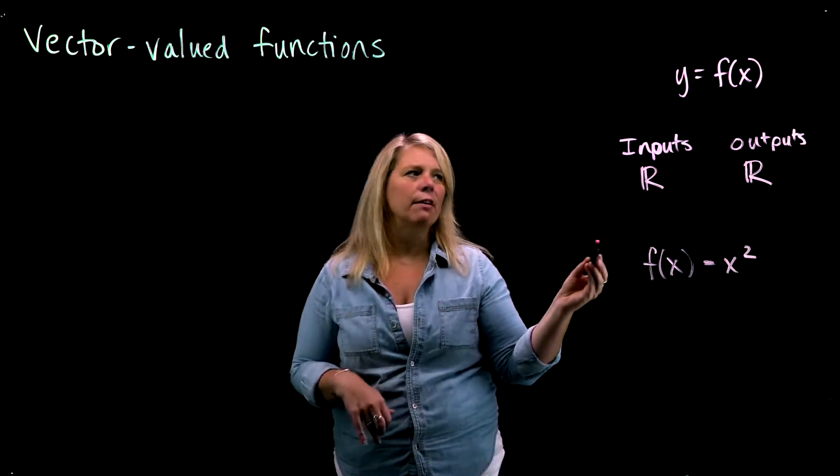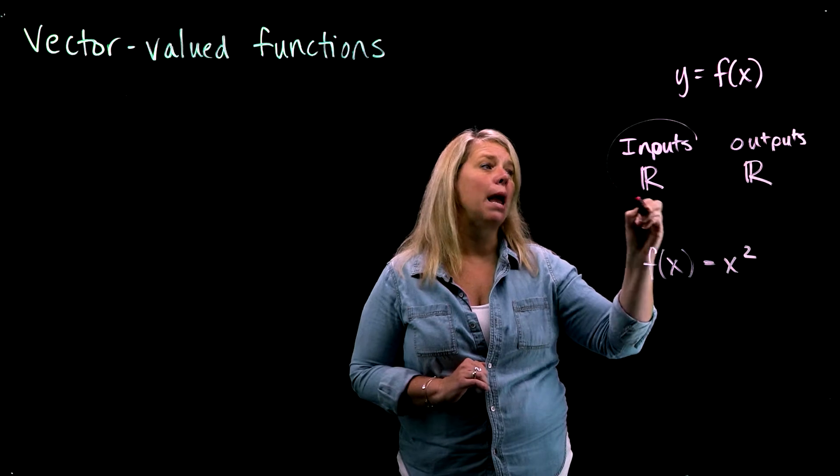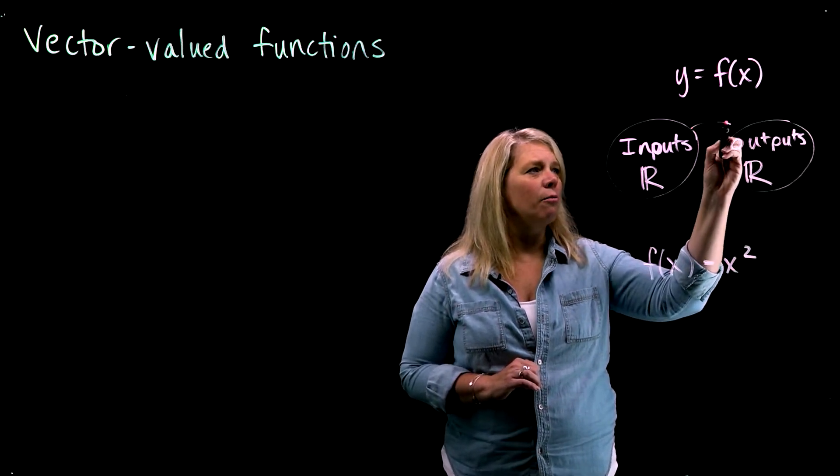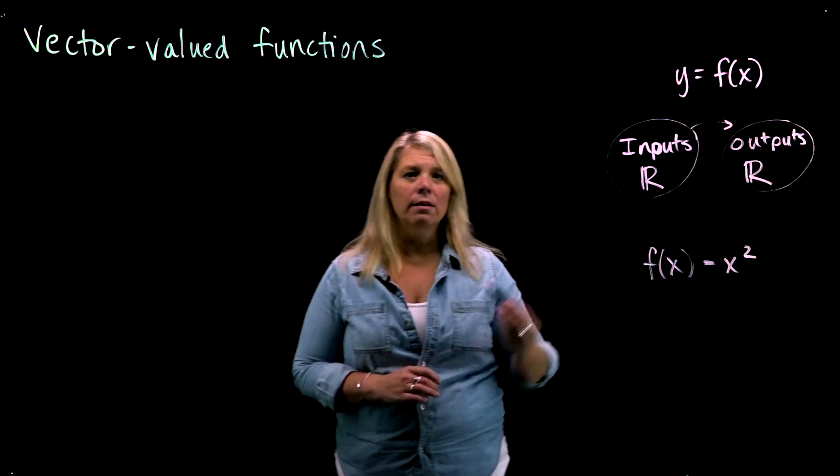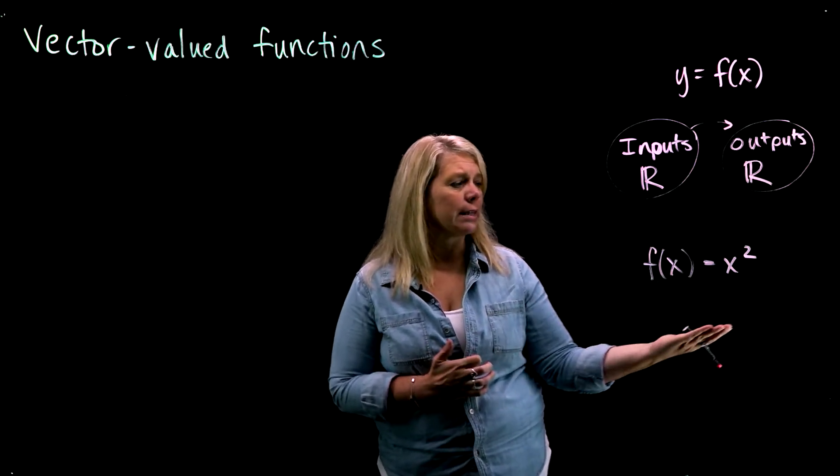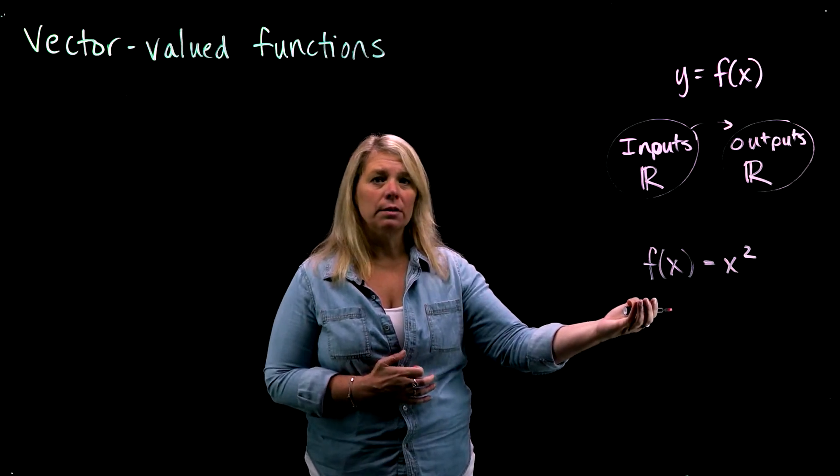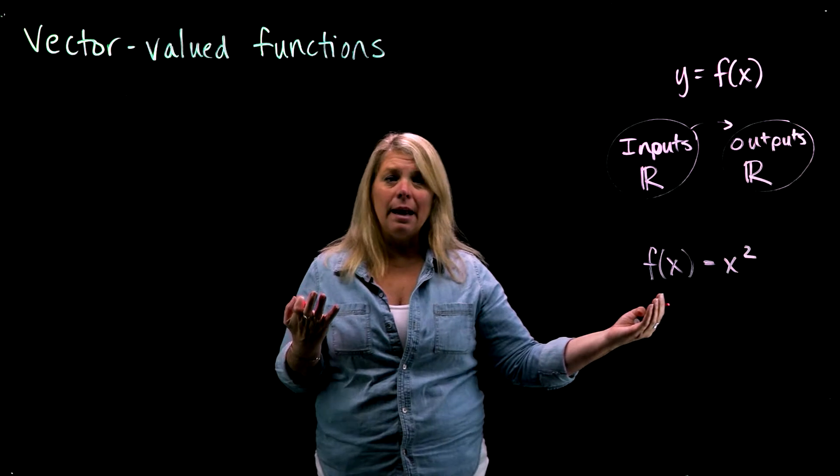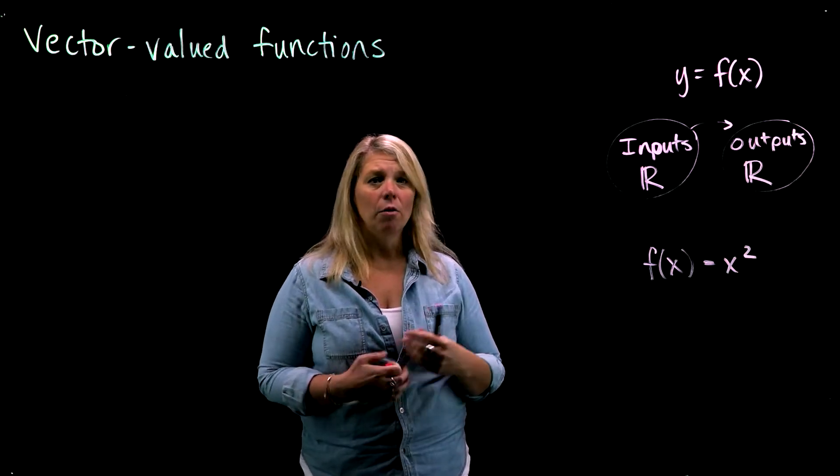When we think about this set of inputs, we talk about things like domain and then the outputs range. We may or may not have all real numbers. For this function, for example, all real numbers are possible inputs, but your outputs would not be any negative real numbers, only zero or bigger.